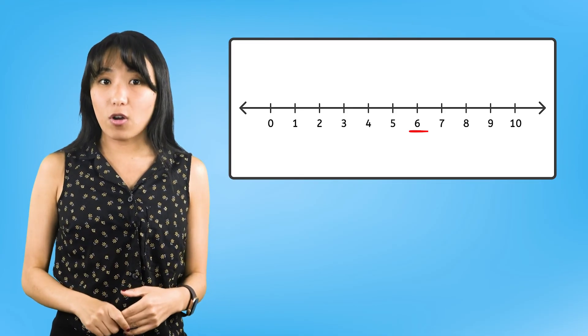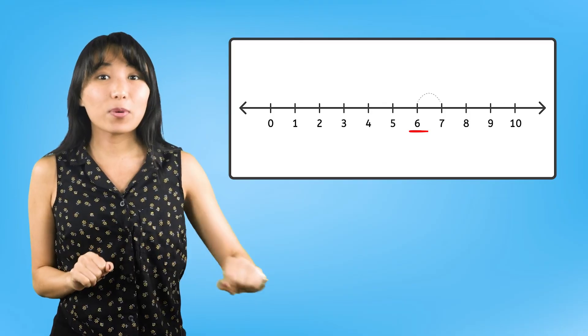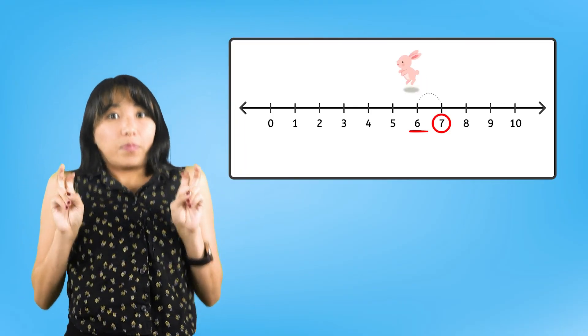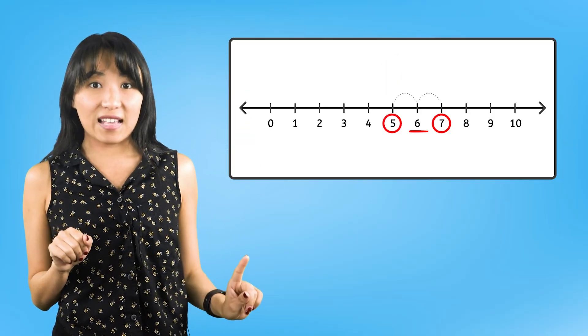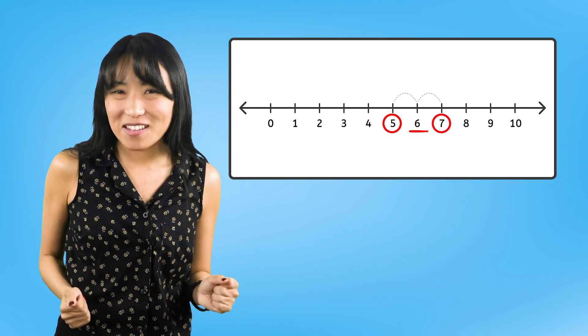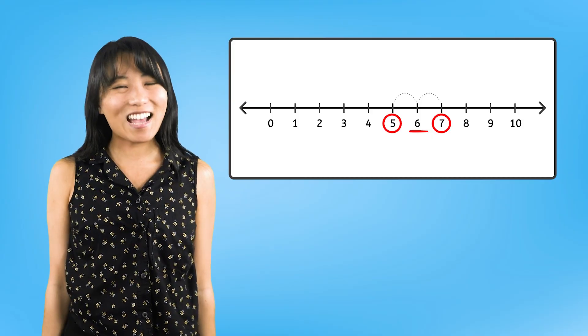Great job, friend! Now, we know that a Forward Frog hop brings us to a number that is one more, and a Backward Bunny hop brings us to a number that is one less. Remember, in math, we can solve any problem together. You can count on it! See you next time!